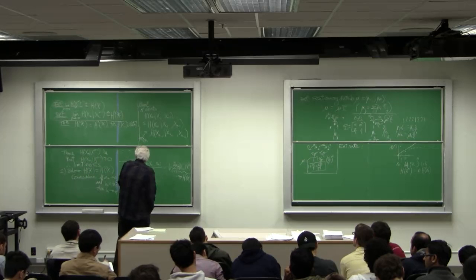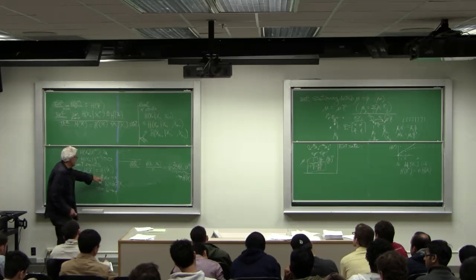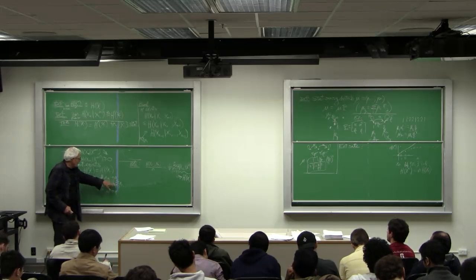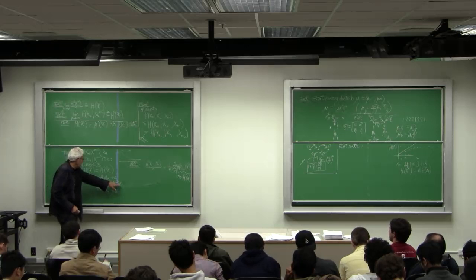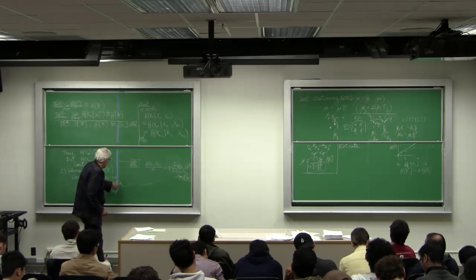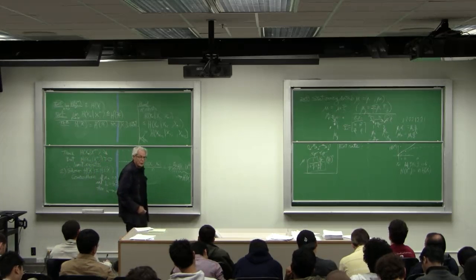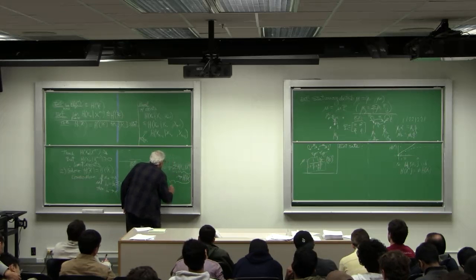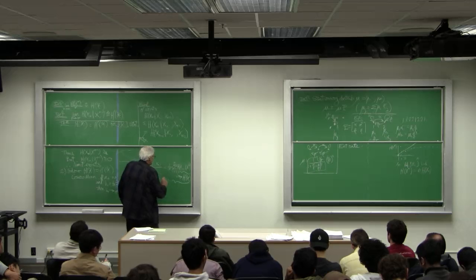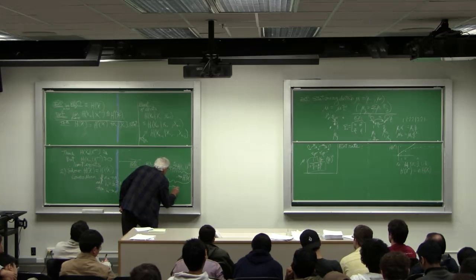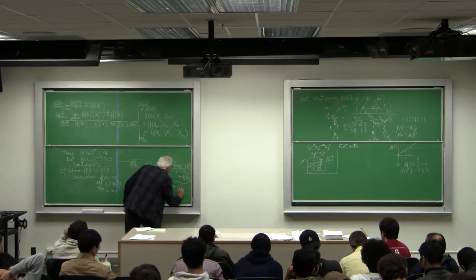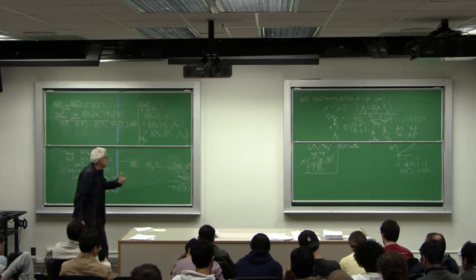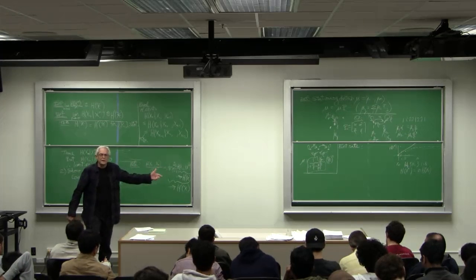And then by invoking this theorem that says the running average of these must be equal to have the same limit as the limit of the terms in it, we get that this goes to h prime of x, the conditional novelty of the next term.